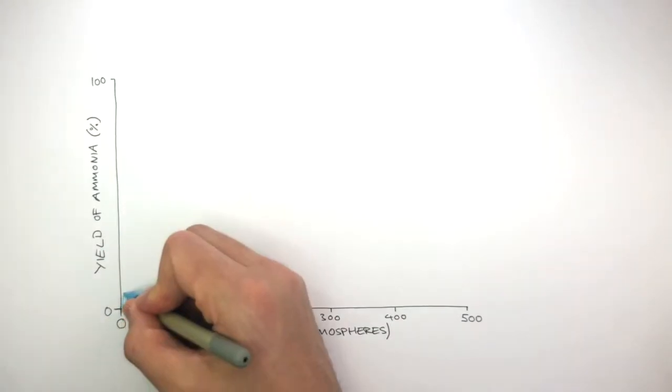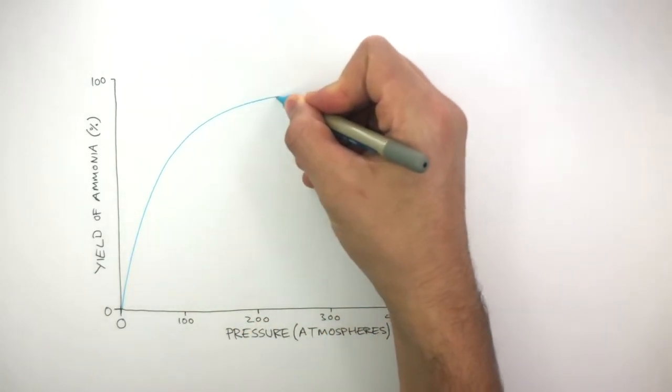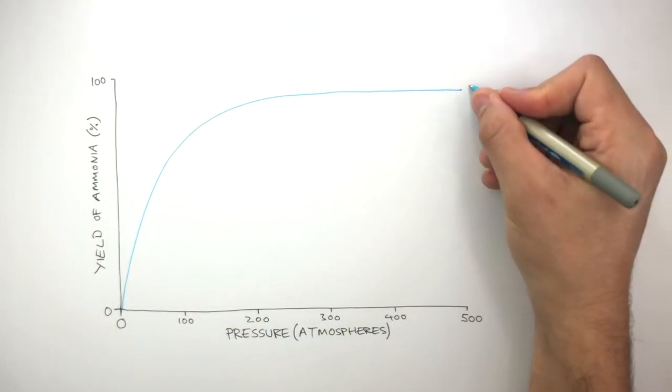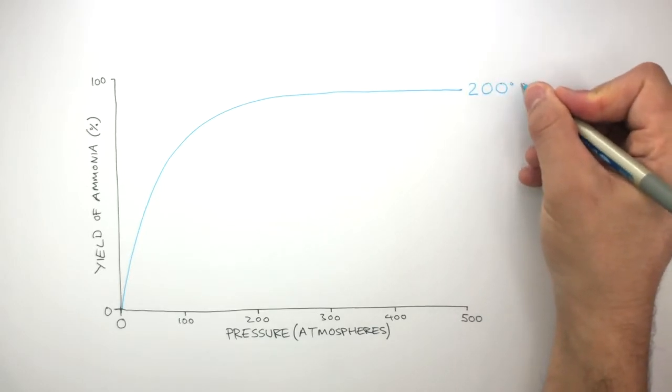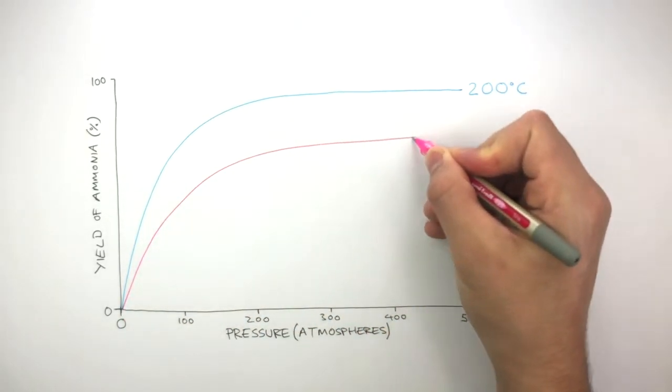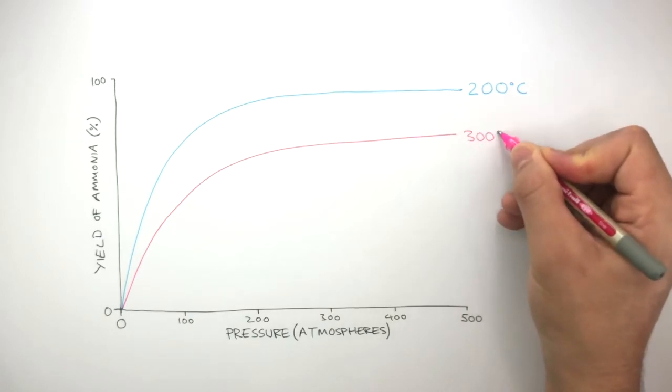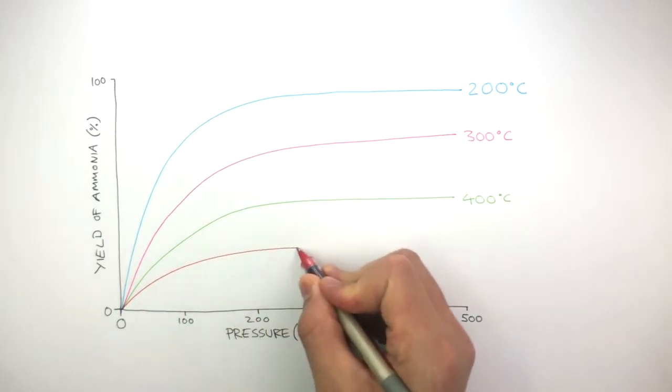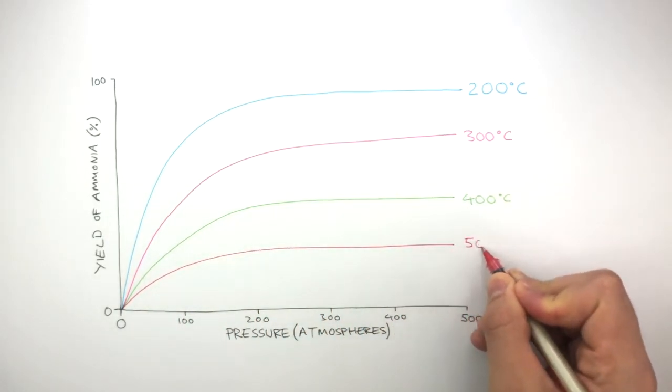Here I'm drawing lines to represent the yield of ammonia depending on the temperature and pressure. The blue line represents 200 degrees Celsius, the pink line represents 300 degrees Celsius, the green line represents 400 degrees Celsius, and the red line represents 500 degrees Celsius.